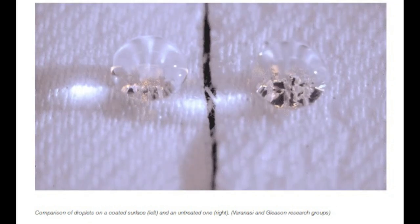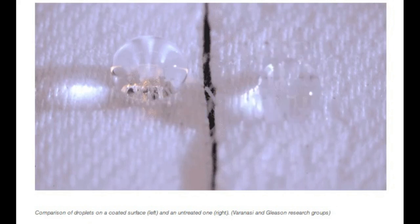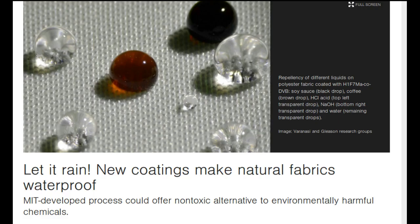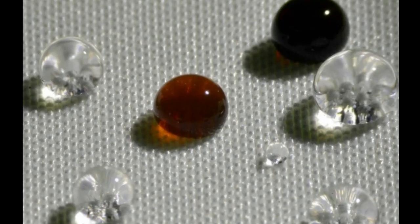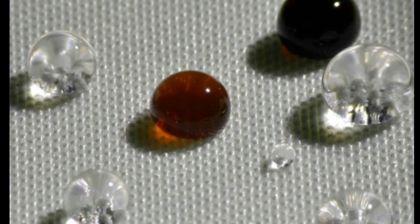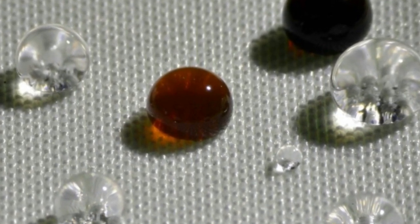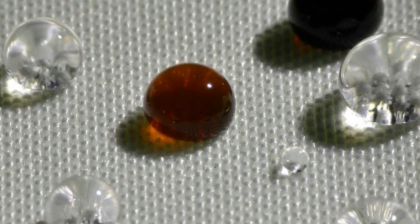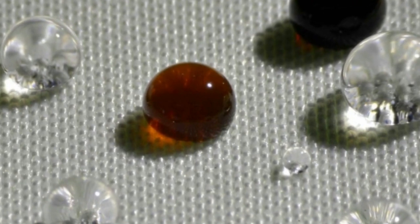Another problem with existing coatings is that they are liquid-based, so the fabric has to be immersed in the liquid and then dried out. This tends to clog all the pores in the fabric, so the fabrics no longer can breathe as they otherwise would. That requires a second manufacturing step in which air is blown through the fabric to reopen those pores.